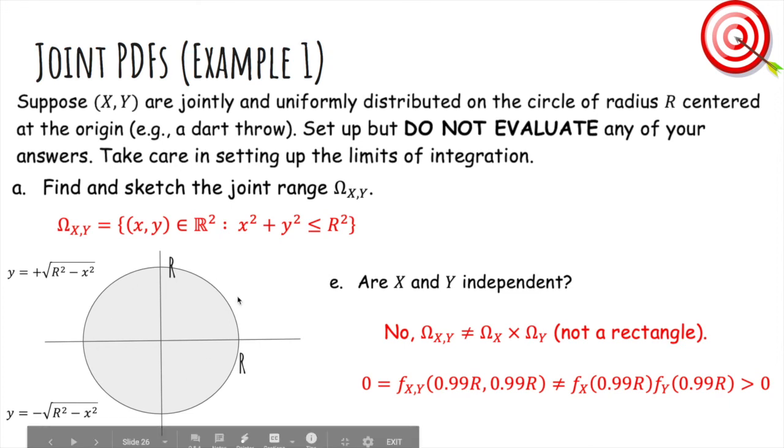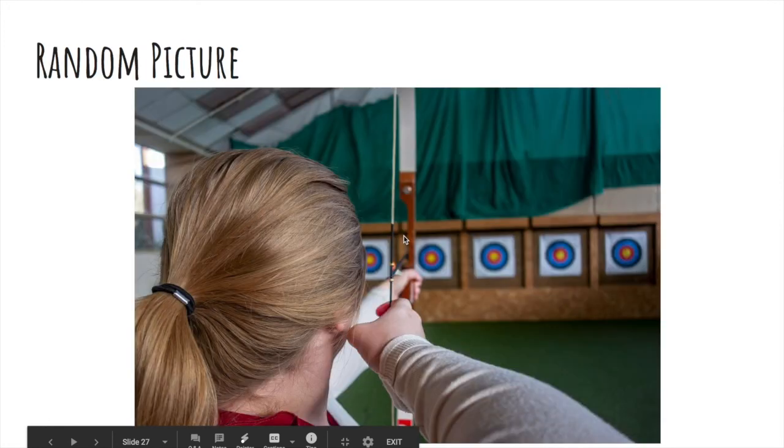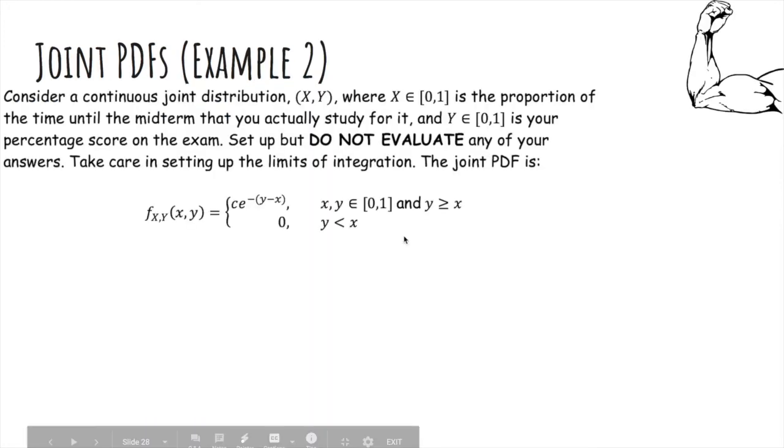But the marginal PDF here is the density of x here, which is like this slit here, and the density of y is this slit here because we're integrating this way. So the product of the marginal PDFs is actually strictly positive, even though the joint density is zero. Here's another example you can work through on your own time.